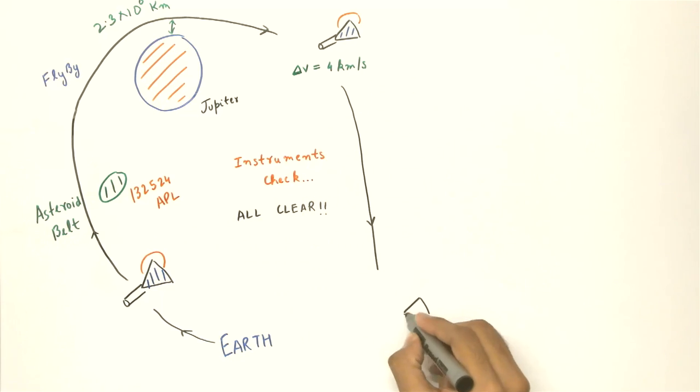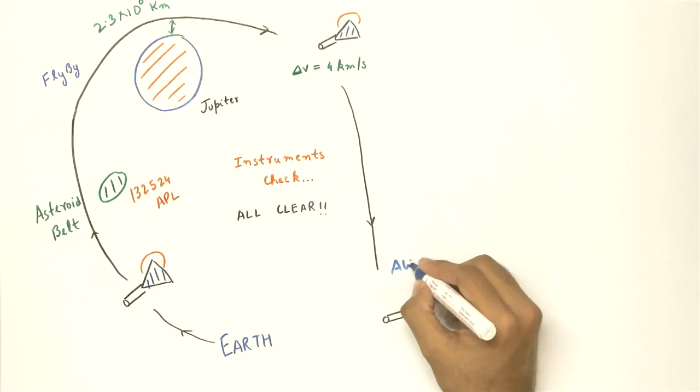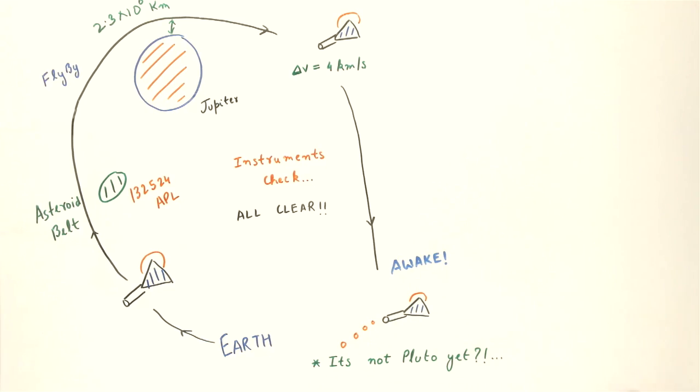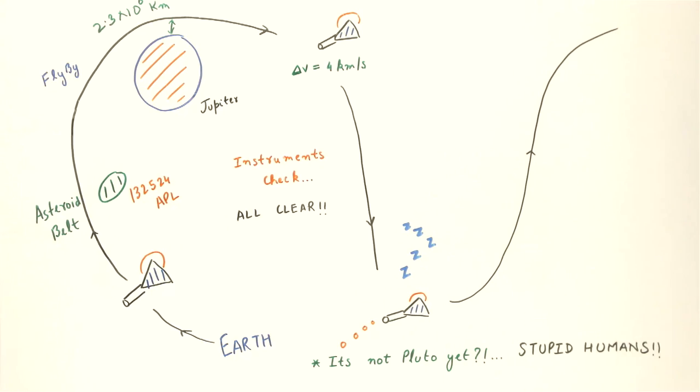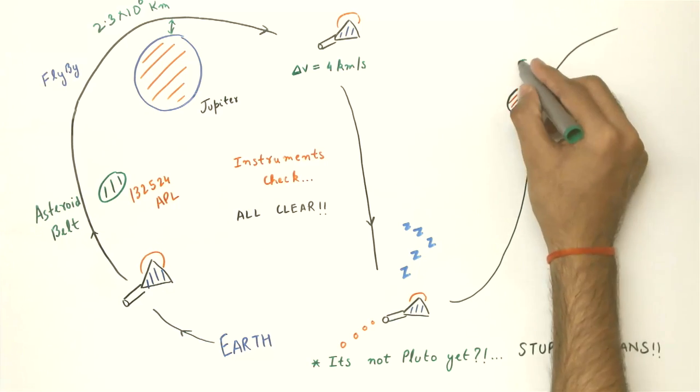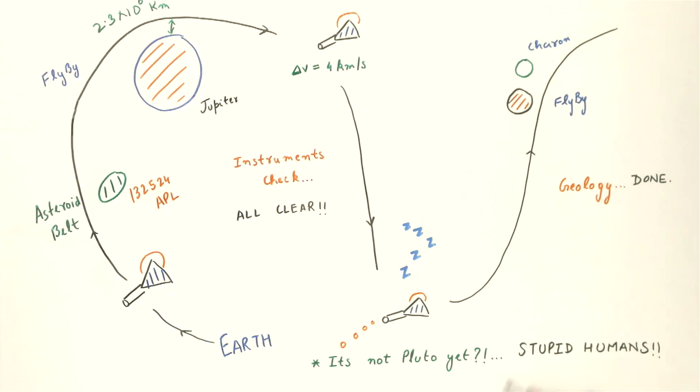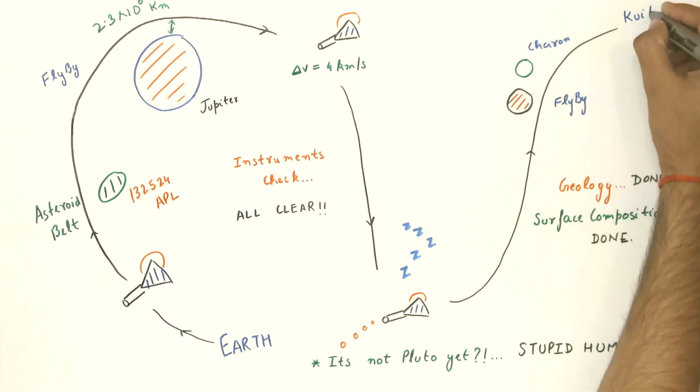After Jupiter, the probe continued towards Pluto. It woke up one last time on 6th December 2014 before its last hibernation. The next time it wakes up it's shelving at Pluto. The craft shall flyby the dwarf planet and its moon Charon and transmit pictures back to Earth. Its main objectives are to determine the geology and surface composition of Pluto and Charon. Hail Hydra!